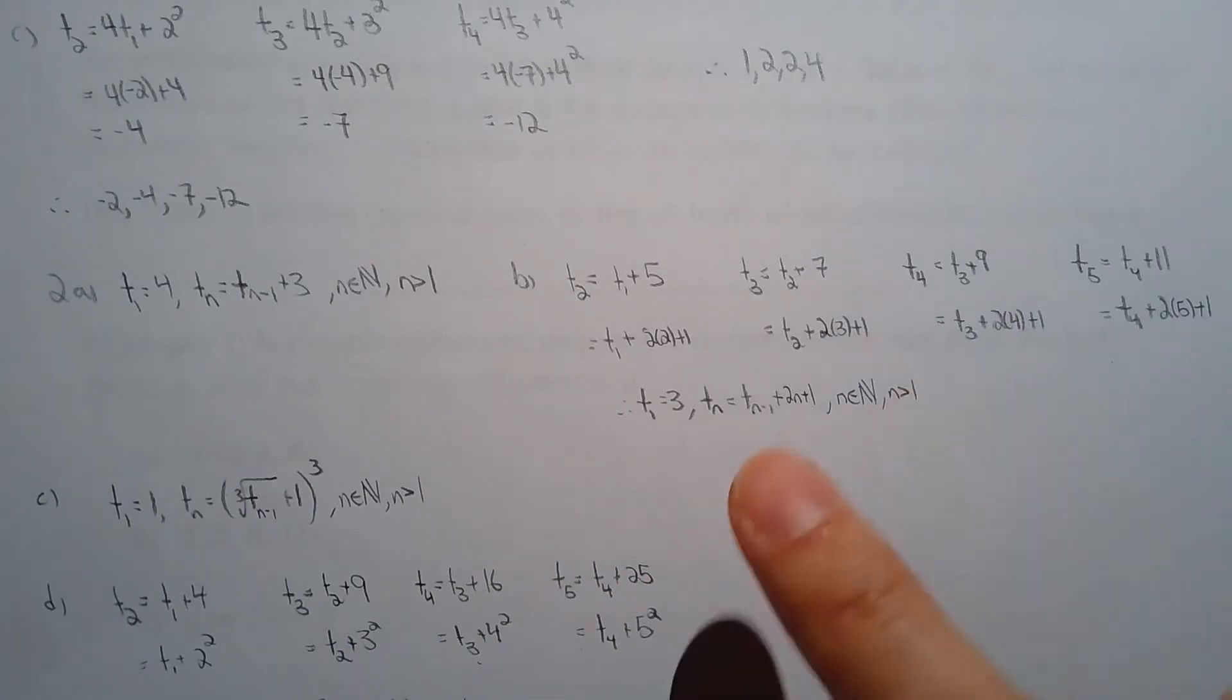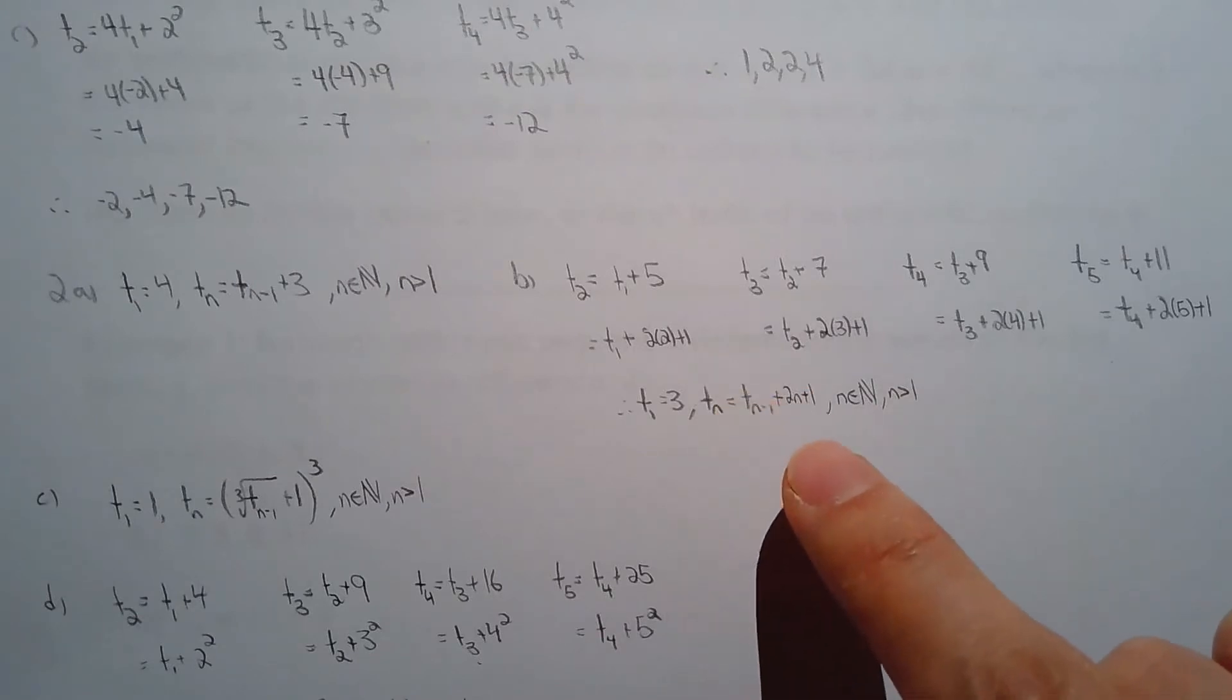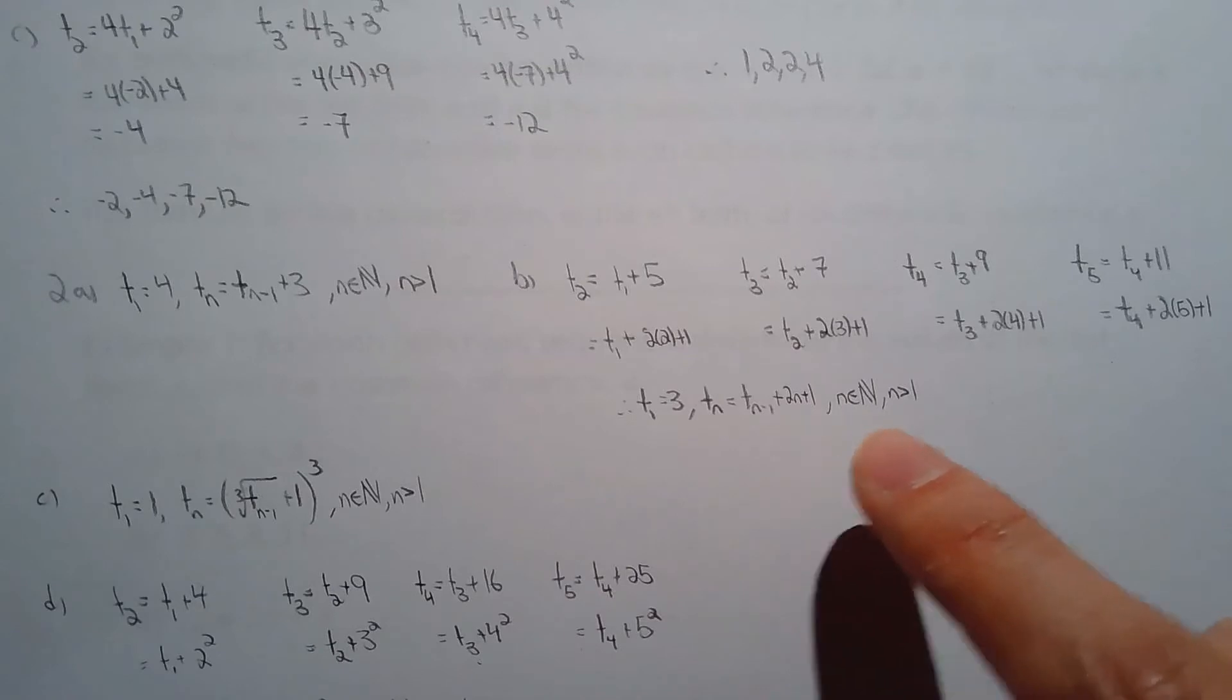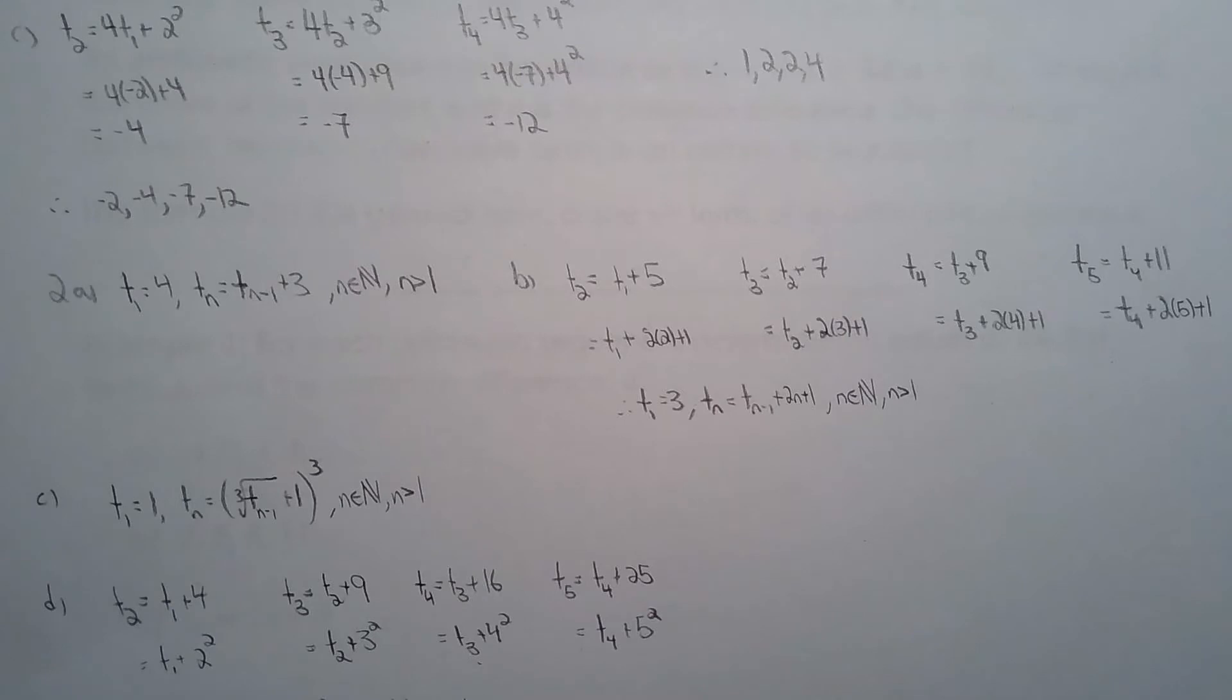For b it wasn't as obvious. You're adding by taking the preceding term and adding by twice the term number and 1. One more than twice the term number. That's what you're adding by.